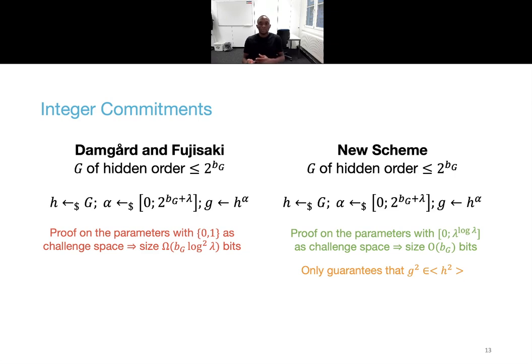And here comes our first contribution, a new integer commitment scheme. One first computes g as before, but now argues that g squared is in the subgroup generated by h squared, instead of proving that g is in the subgroup generated by h. The benefit is that one can use a much larger challenge space, and achieve the same soundness error with a single protocol run, and have much smaller proofs.